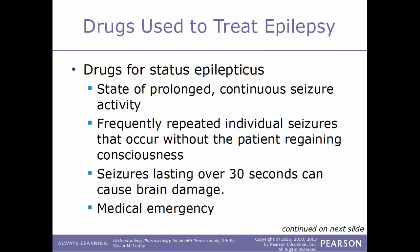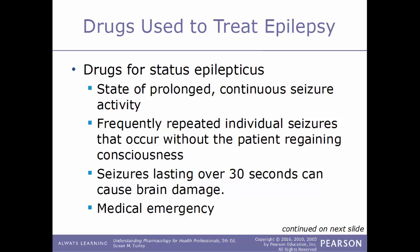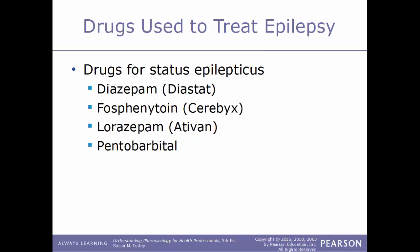Status epilepticus is a medical emergency — a state of prolonged continuous seizure, with frequently repeated seizures without the patient regaining consciousness. Any seizure lasting 30 seconds or longer can cause brain damage, so this must be treated immediately. Drugs that can treat this condition include diazepam (Diastat), fosphenytoin (Cerebyx), lorazepam (Ativan), and pentobarbital.